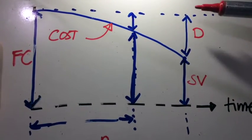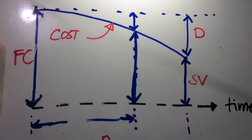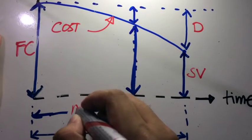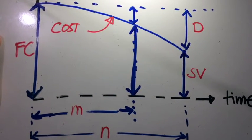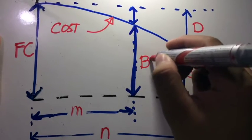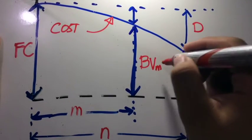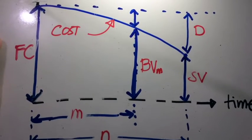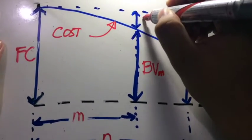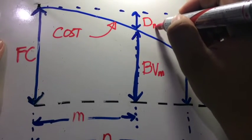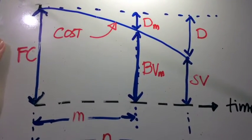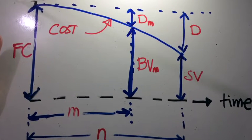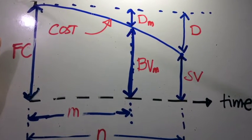It's the distance from the original cost to the salvage value. Now, if I have an arbitrary time m, we call this the book value at m. The book value is the current value at that point in time, and this is the depreciation at that point in time. So here are some basic definitions or basic elements of depreciation.